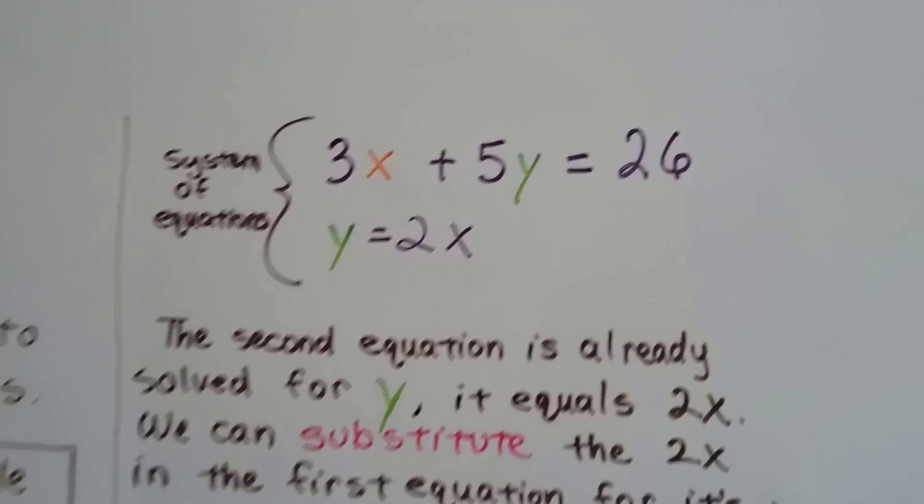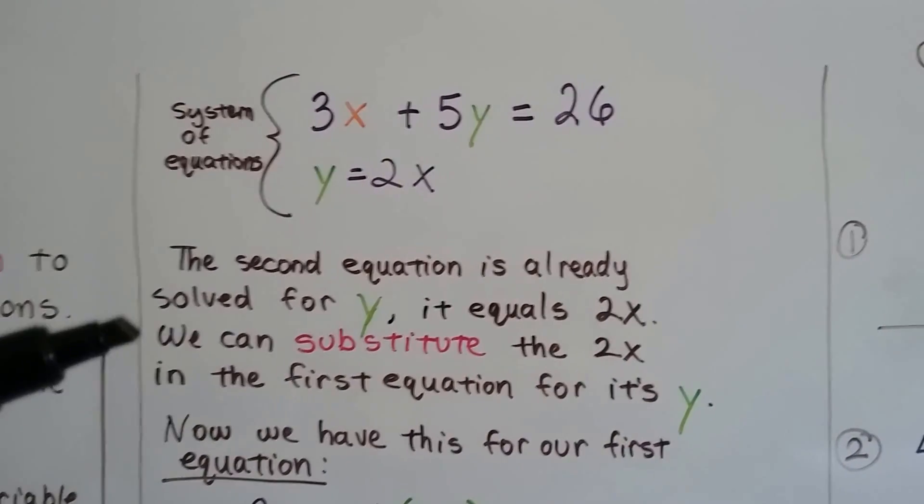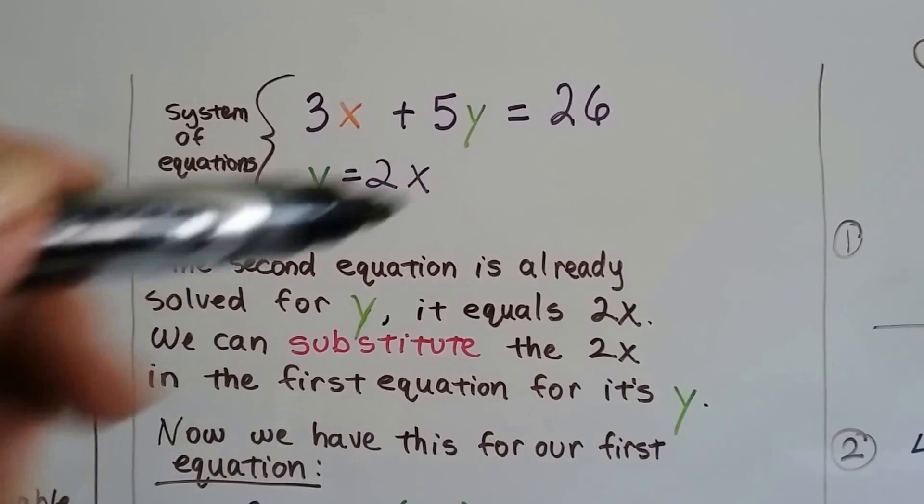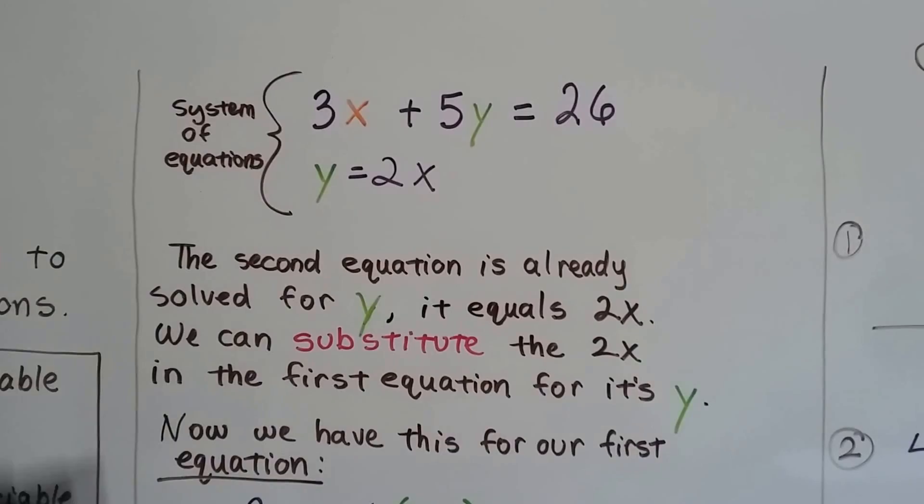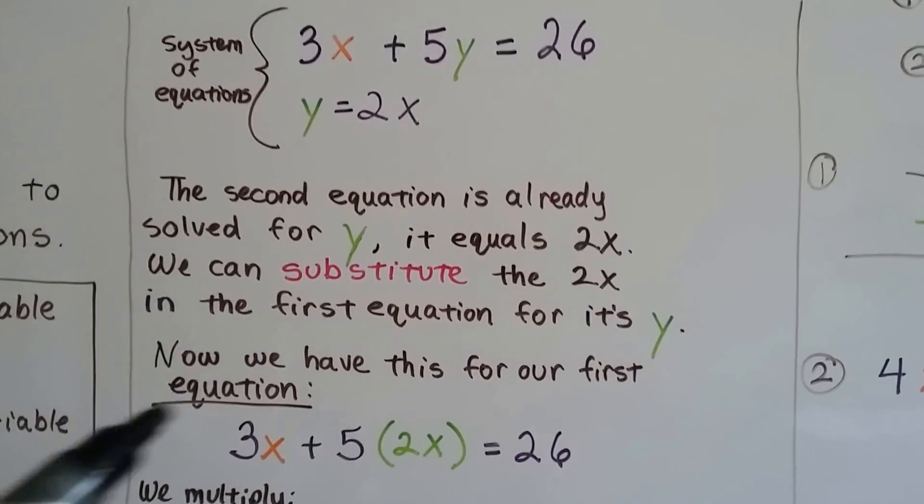This y equals 2x already tells us what y is equal to. It's equal to 2x. The second equation is already solved for y. It equals 2x. We can substitute this 2x into the first equation right here for the y.